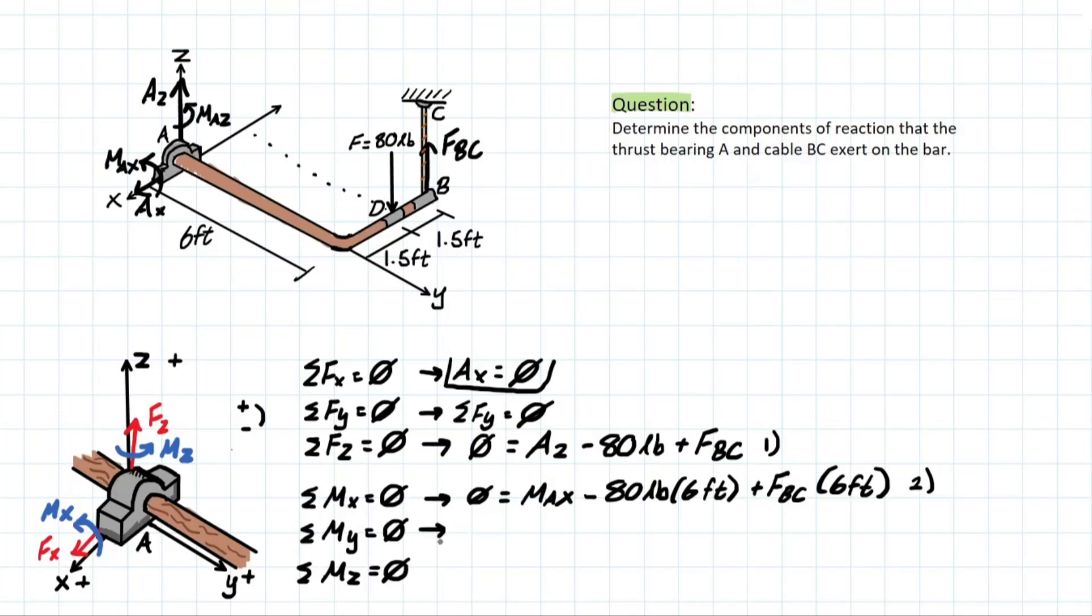My or moment at y. How can we solve for this? It's a similar process to x. We're going to take zero. And then we're going to look at the distance from y to these forces. All right. So the first thing we need to realize also is that MAy does not exist for the support. So we can skip over that. We're looking at this 80 pound force going with respect to the y-axis around it like this, right? It's going clockwise, which means the sign is going to be negative, negative 80 pounds, times the distance away from the y-axis to that force, 1.5 feet, and then plus FBC times the distance 3 feet.